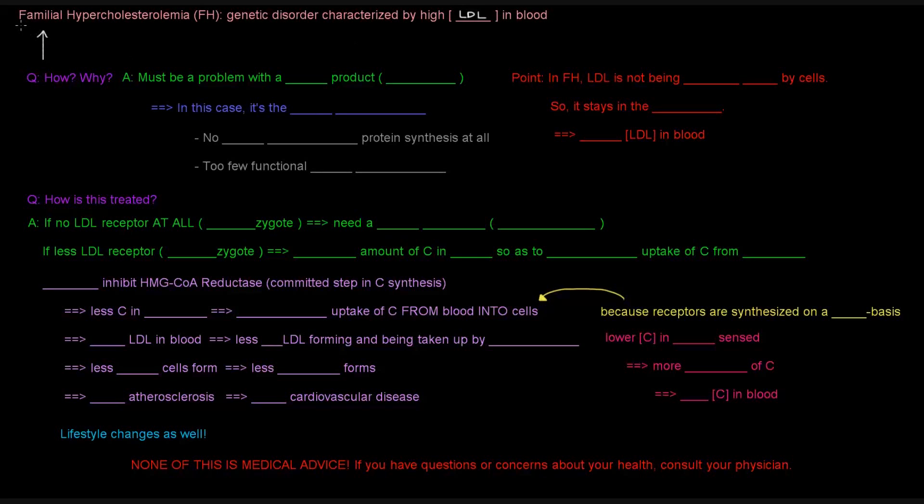Familial means family, genetic. If it's genetic, that basically means there's a problem with a gene product. Gene products are proteins. Something's wrong with a particular protein that causes familial hypercholesterolemia, that causes this high cholesterol in the blood. In this case, that specific protein that is the problem is the LDL receptor.